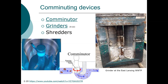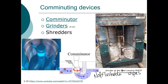The grinder shown was removed from the East Lansing Wastewater Treatment Plant — that white material is wipes. Flushable wipes are not really flushable and should not be flushed down the toilet. Please don't do it, because it clogs the grinders and cleaning those grinders is not a pleasant task for operators.